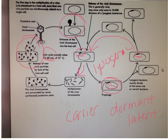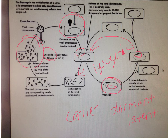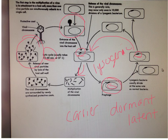An example is chicken pox and shingles. You cannot get shingles if you did not have the actual chicken pox disease. When you get chicken pox, your body handles it, but the virus doesn't get completely wiped out - it becomes dormant through the lysogenic cycle. If your body becomes weak or stressed years later, it can flare up as shingles. That's an example of the lysogenic phase. Next video we'll talk more about infections and how viral diseases spread.